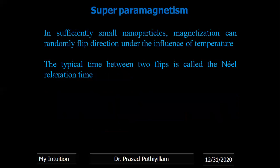In sufficiently small size, that is nanosize, the magnetization can randomly flip directions under the influence of temperature. If the size of the nanoparticle is near 3 nanometers or below 50 nanometers, the effect of the magnetic field on the particle can be controlled by temperature. A small change in temperature will flip the direction of arrangement of the particles in the magnetic field. The time between two such flips is called the Néel relaxation time.